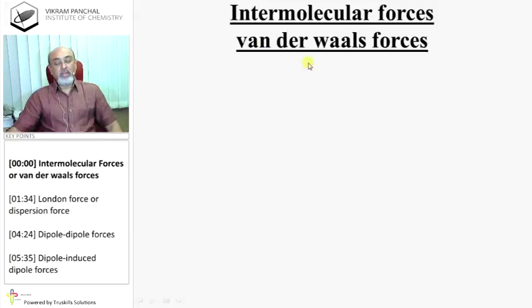Van der Waal is one kind of bond, and it is the sixth number of bond, which is very, very weak. In fact, when any molecule is existing, it has any one of the three bonds: either covalent, ionic, or metallic.